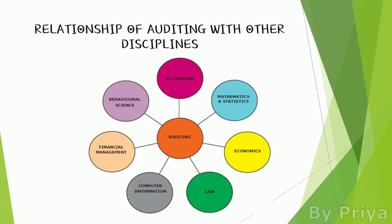Now let us see the relationship of auditing with other disciplines. In order to complete the auditing process and add value, an auditor should have knowledge of accounting, mathematics and statistics, behavioral science, financial management, computer information, law, and economics.